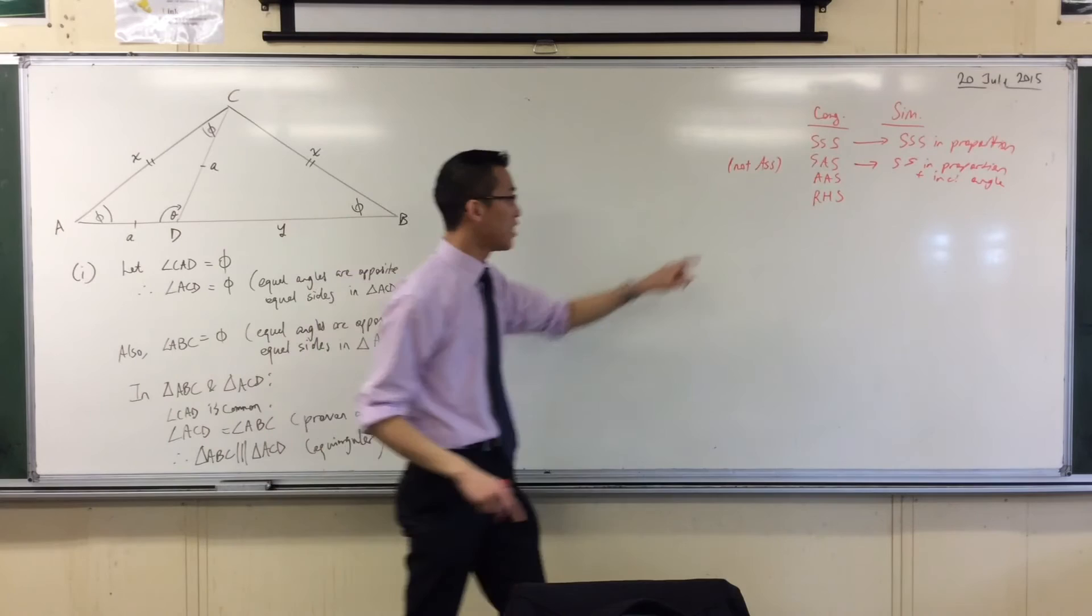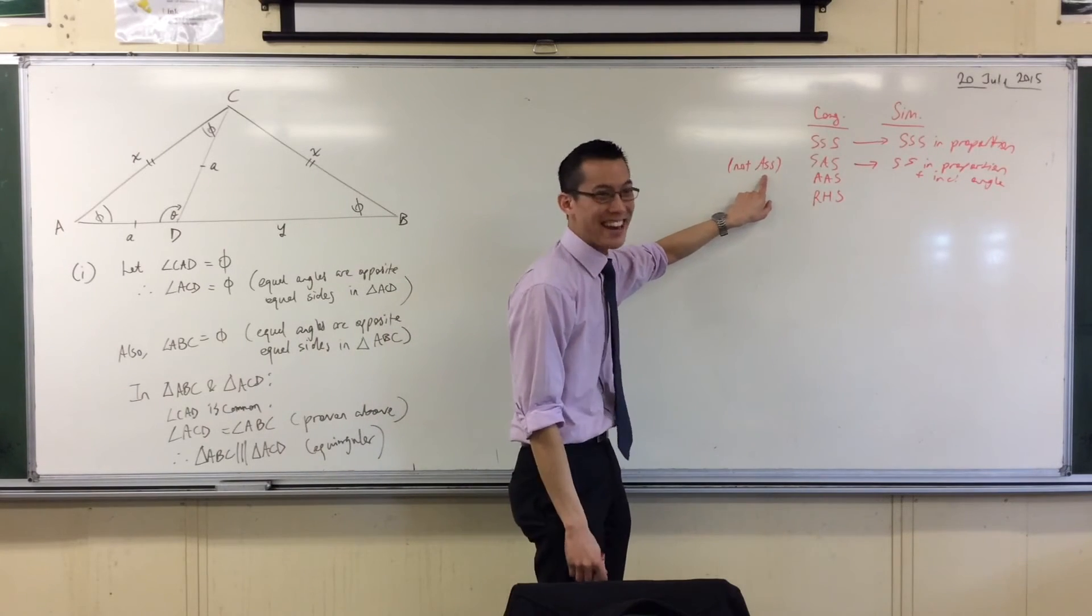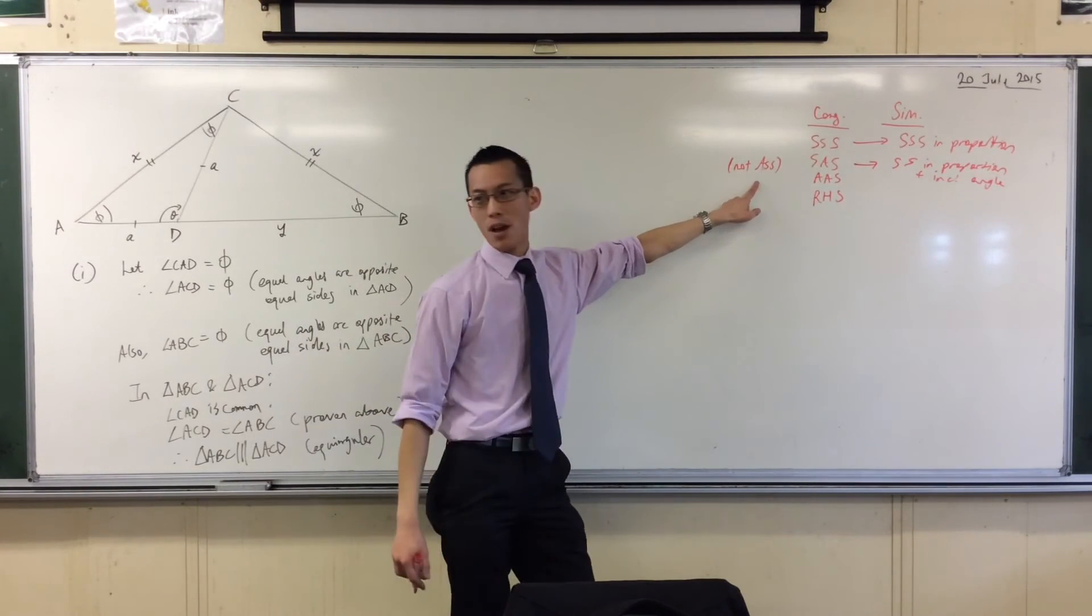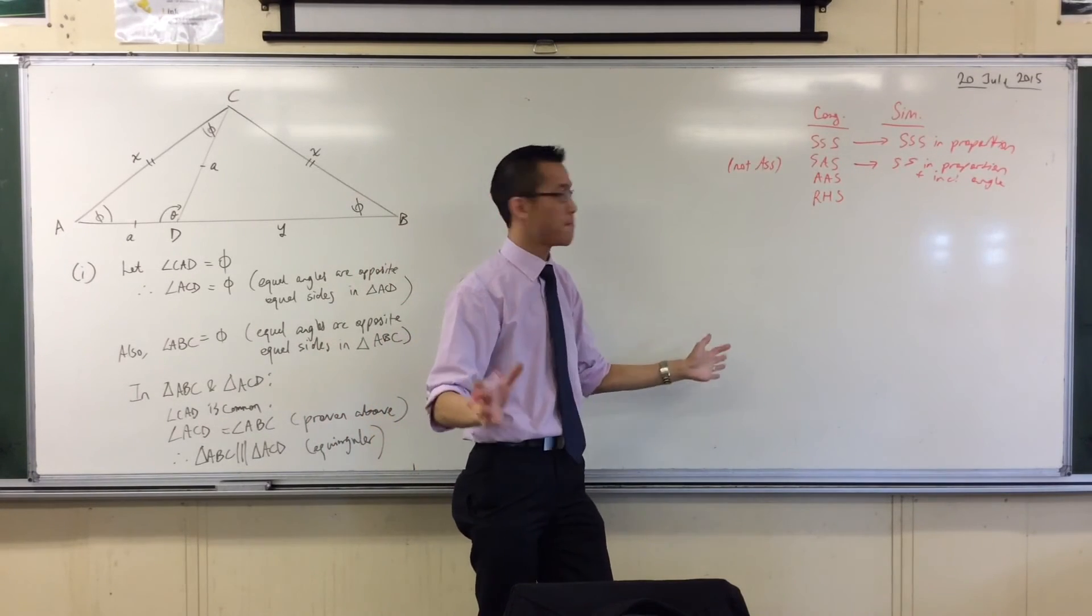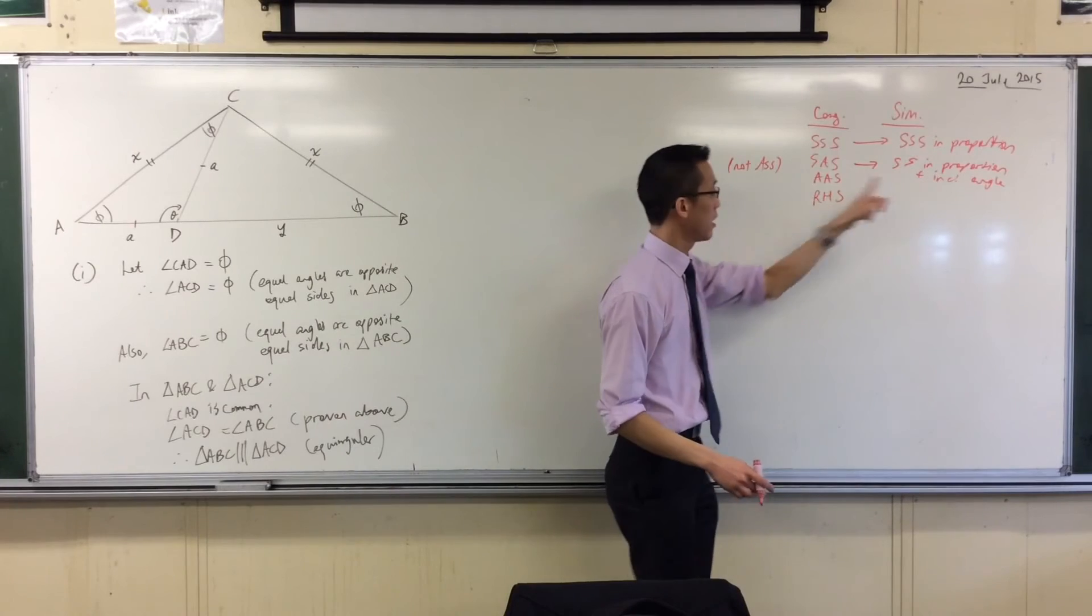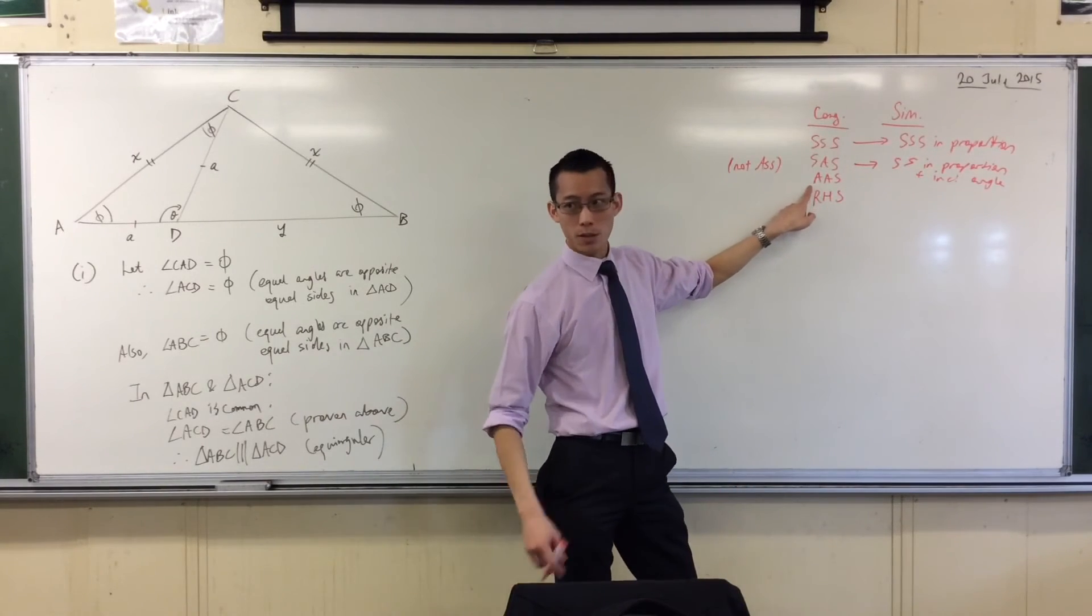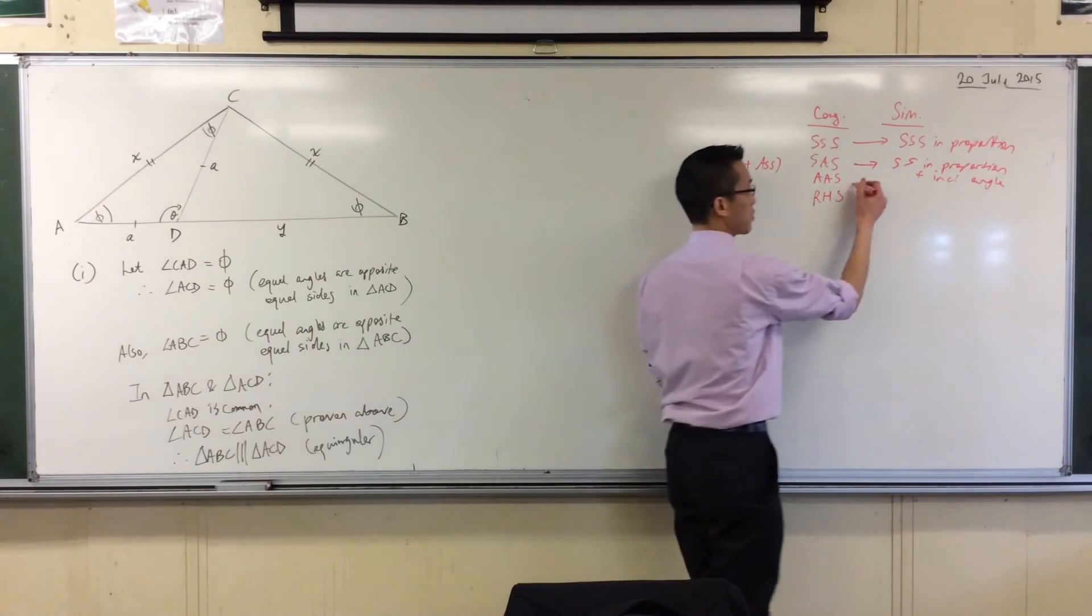It has to be in between, otherwise you're an ass, right? And you can make two triangles which have pairs of sides in proportion and the angles elsewhere, and they are not similar. It must be included. What's the similarity proof that corresponds to this? Two angles. Just two angles.